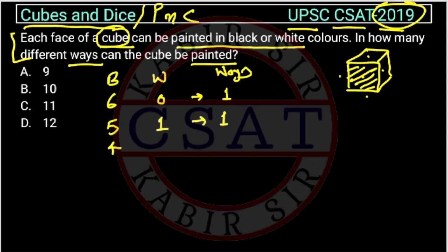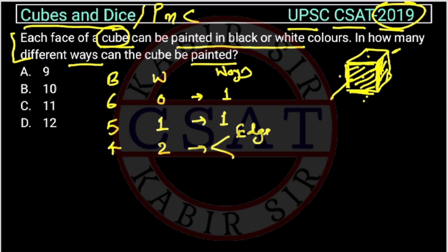Now, if four faces are black and two faces are white, there are two possibilities. One is when the two white faces share a common edge — no matter which adjacent face pair you choose, it looks the same. The other possibility is when the two white faces are on opposite sides of the cube. So there are two distinct ways in this case.